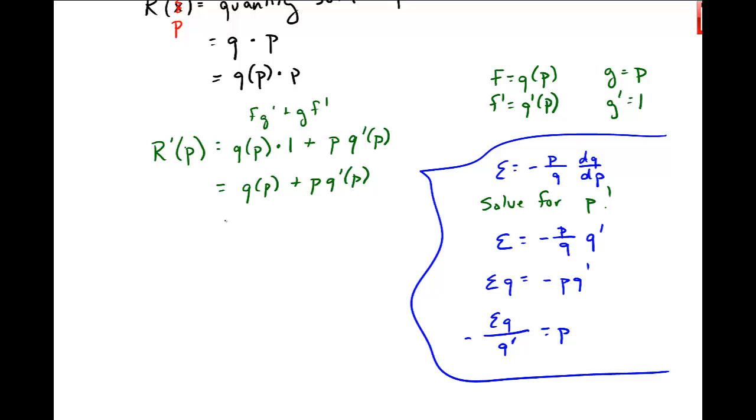Now I want to stick that in right here in this revenue function. So q, and I'll drop these q of p's for now, this is my eq over q prime - that's a negative - and then this is still my q prime from before. These q primes will cancel, this one in the denominator and this one in the numerator. I'm left with q minus epsilon times q. If I factor out a q, I get q times 1 minus this point elasticity, and that is the derivative of revenue.